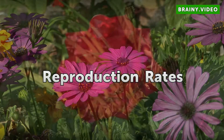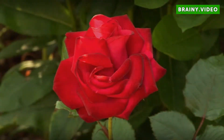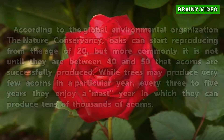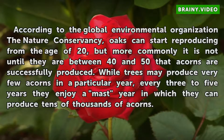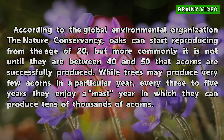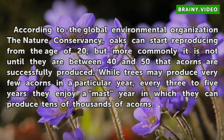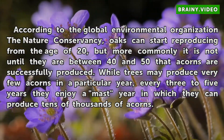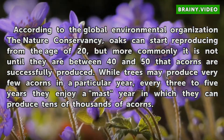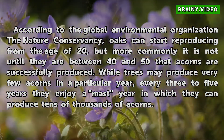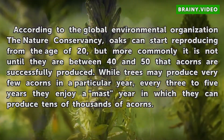Reproduction Rates. According to the Global Environmental Organization The Nature Conservancy, oaks can start reproducing from the age of 20, but more commonly it is not until they are between 40 and 50 that acorns are successfully produced. While trees may produce very few acorns in a particular year, every three to five years they enjoy a mast year in which they can produce tens of thousands of acorns.